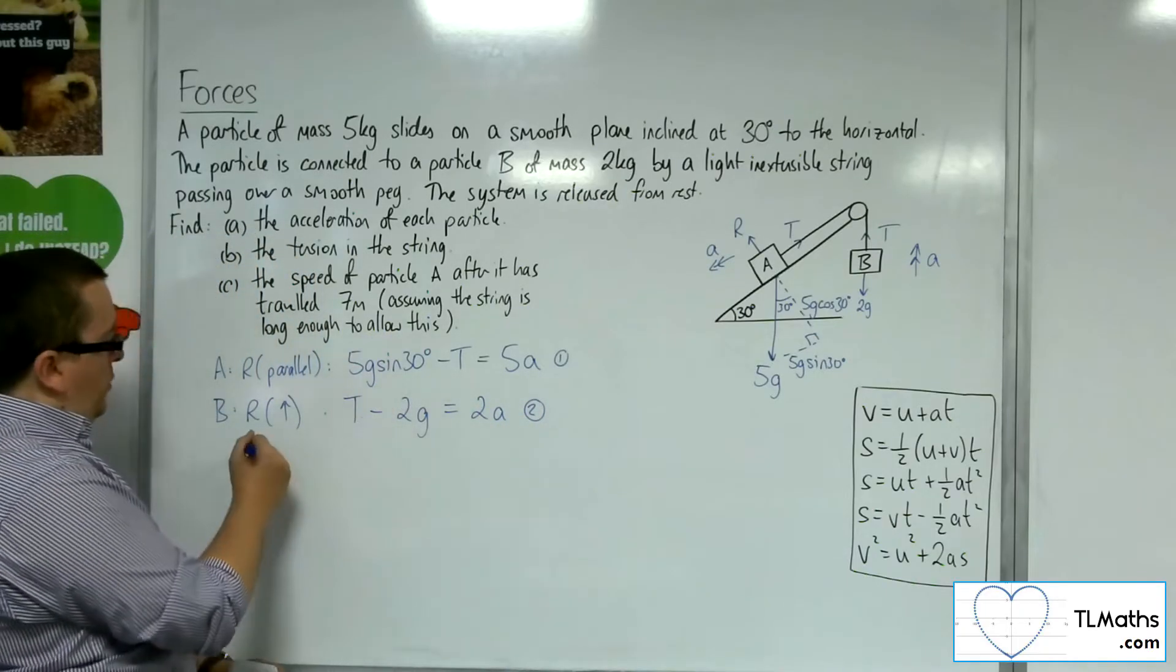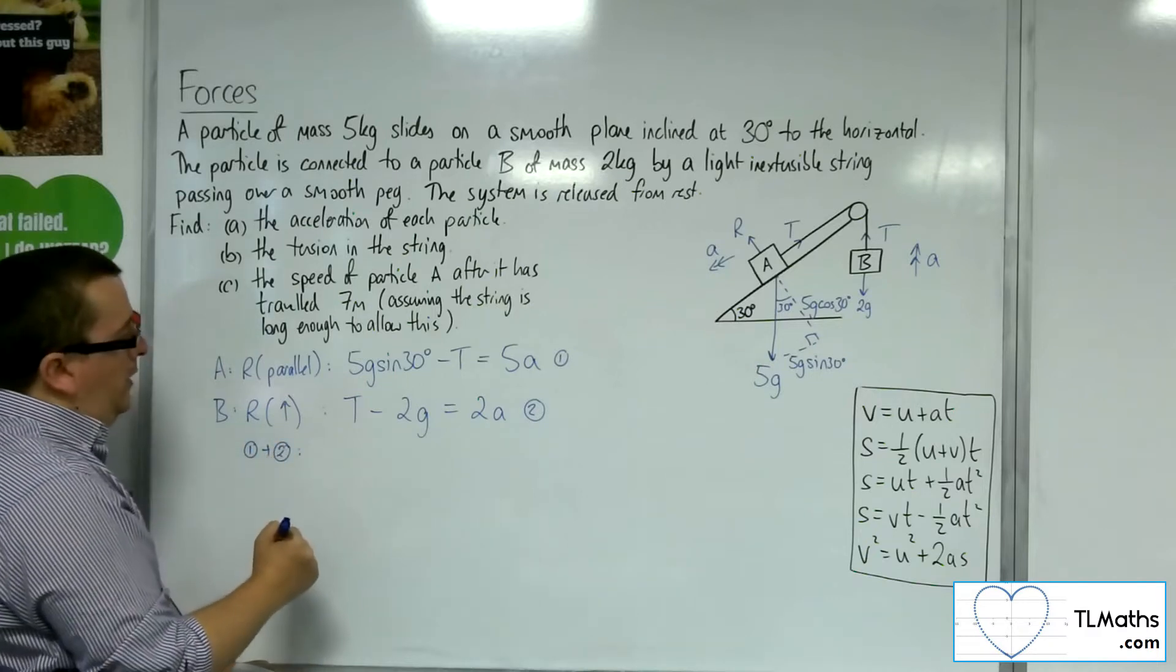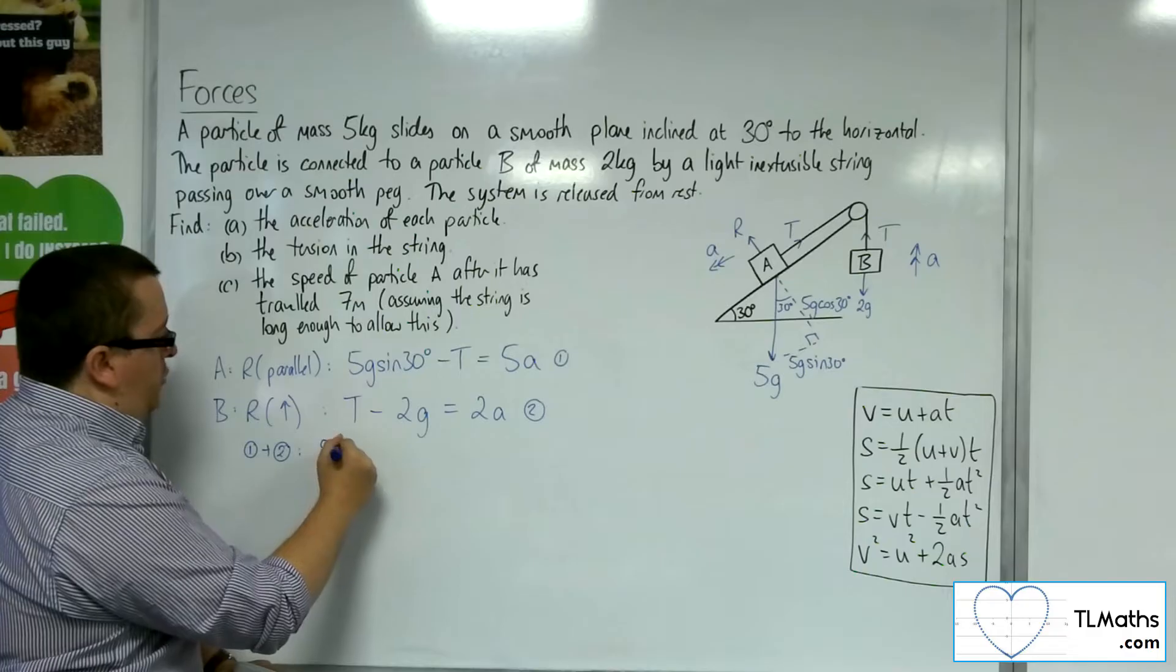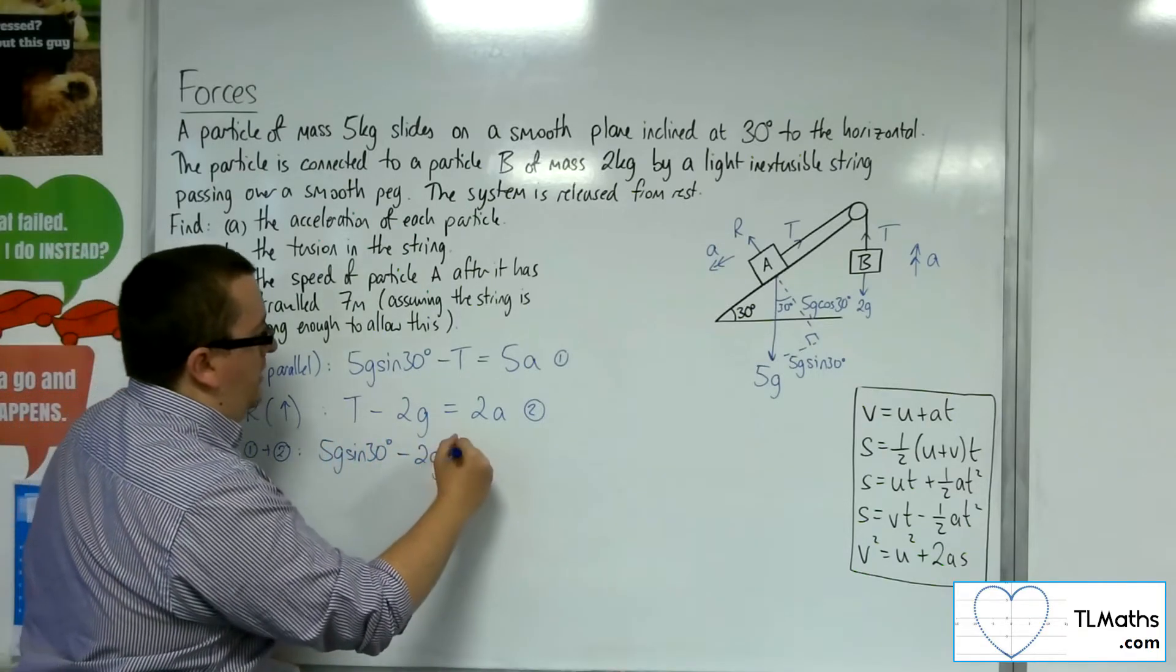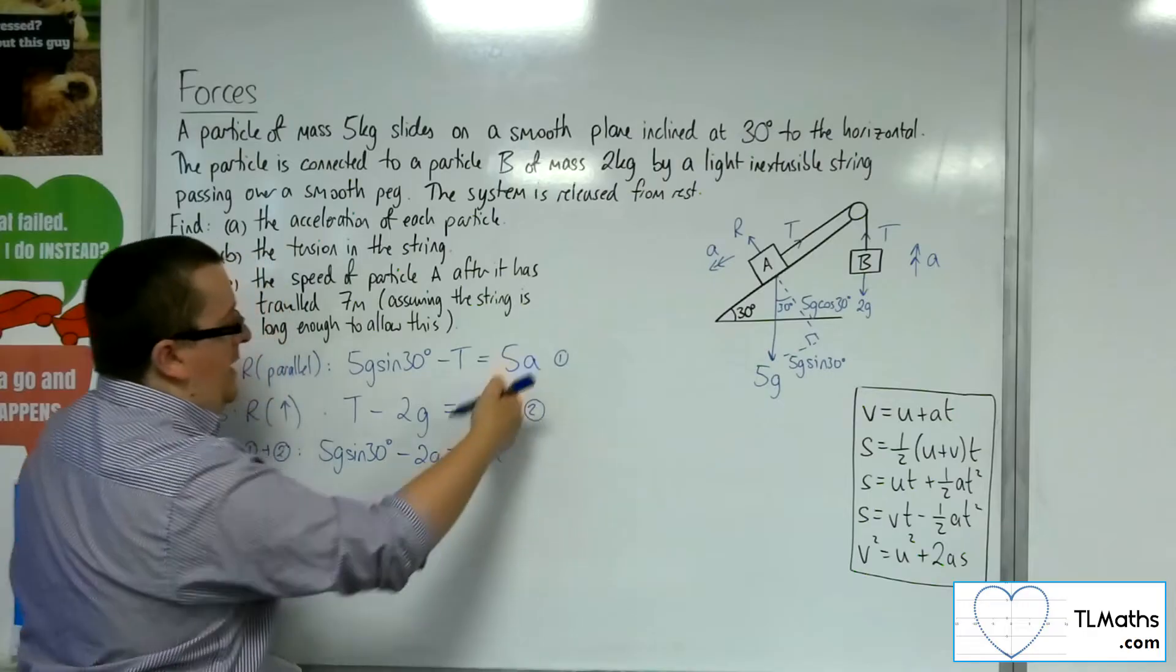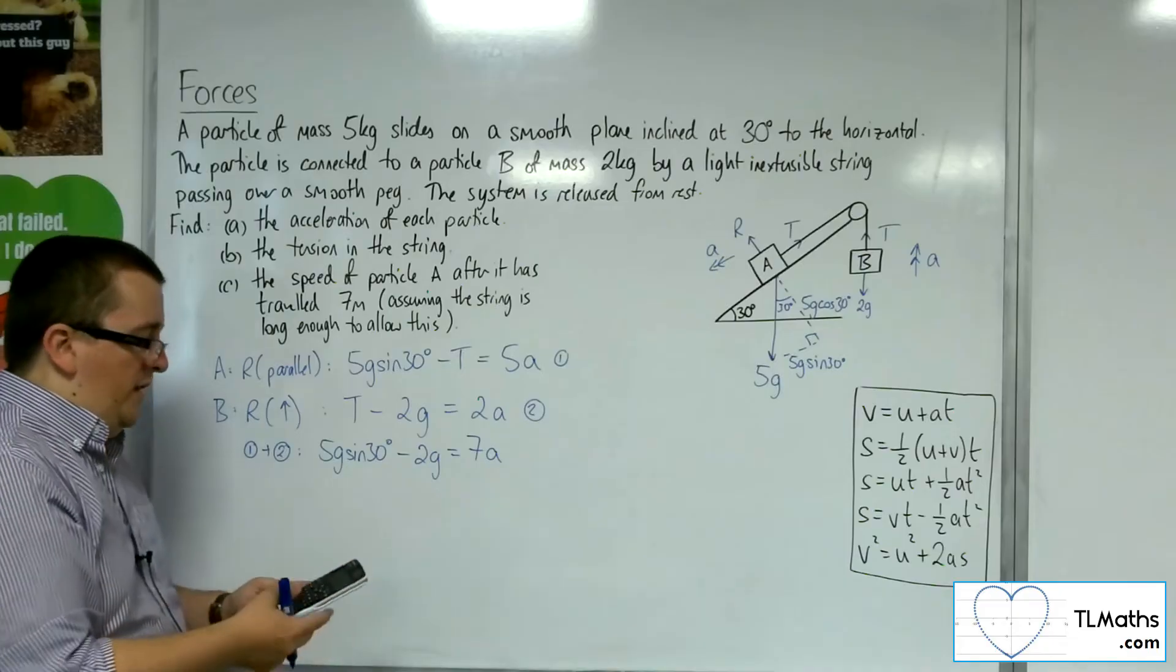So if I add those two equations together, it's going to knock out the tension. And I'll be left with 5G sine 30, take away 2G, is equal to 7A, adding those two together. Using G, taking G as 9.8,